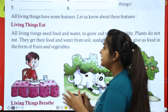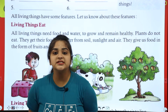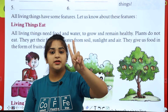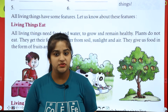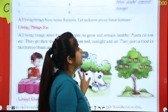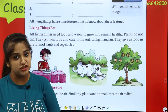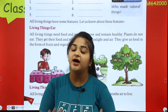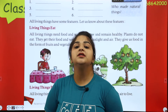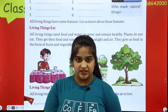Plants do not eat food, but they get their food from air, water, sunlight and soil. They give us food in the form of fruits and vegetables — we get food from plants in two ways: fruits and vegetables.